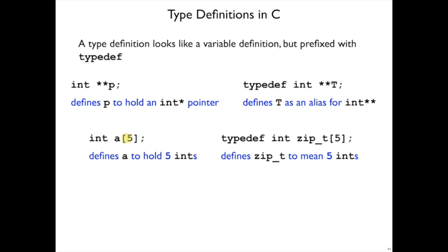And finally, we can do this with arrays. Here we have a variable declaration of a as an array of five integers. Here I have a type declaration saying that zip_t means an array of five integers. And for example, just like I could say int uofu[5] and then provide five numbers to initialize the array, I can say zip_t uofu and provide five integers, provided I've used this type definition before.